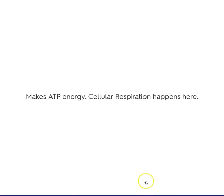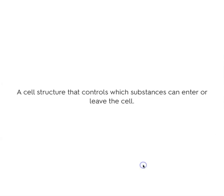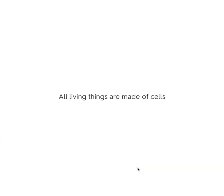Let's go with these flashcards. Mitochondria: makes ATP energy, cellular respiration happens here. Ribosome: this is where protein synthesis happens, proteins are made in the ribosome. Cell membrane: a cell structure that controls which substances can enter or leave the cell.